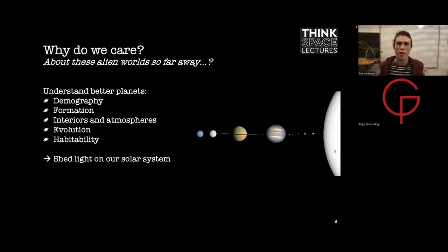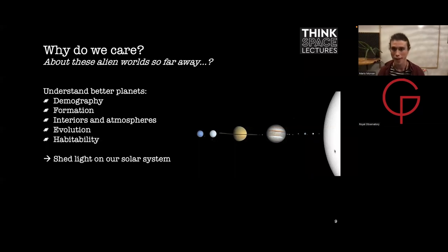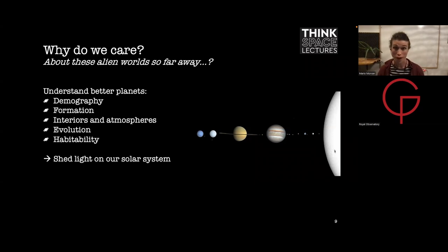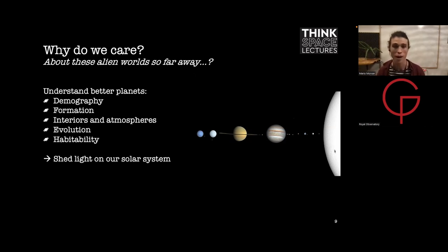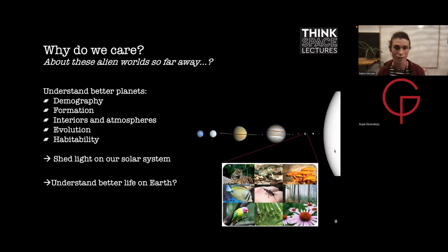Why do we care about these worlds? They're far too far away to travel to, and most of them we can't even see directly. But by studying them we can try to answer questions such as: what is the population of exoplanets like, what are the different types of planets, how do planets form and evolve, what are they made of, and what are the possible markers for life? This in turn sheds light on our own solar system, our planet Earth, and the phenomenon of life on Earth — the only occurrence of this phenomenon we know of.